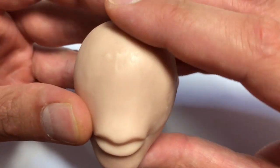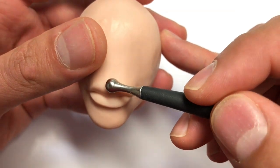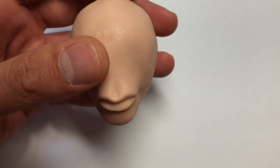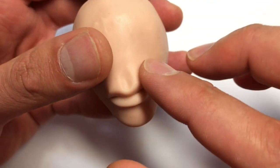I'm just going to go in here with my ball stylus and shape out that cupid's bow really nice. And believe it or not, you're done.